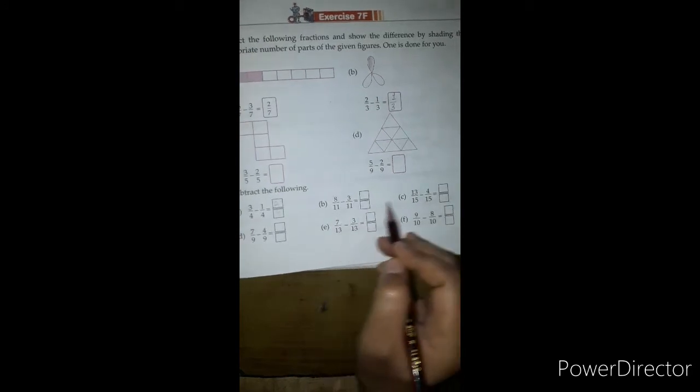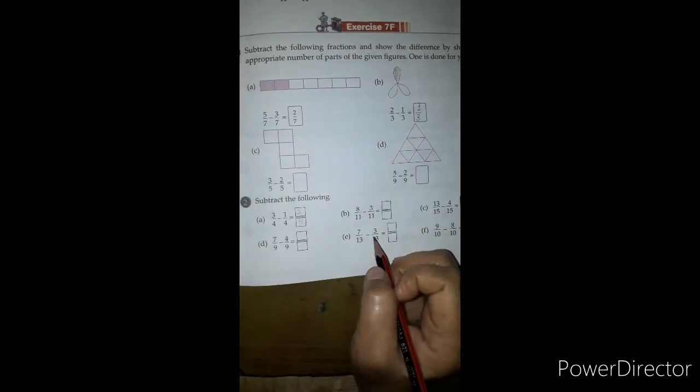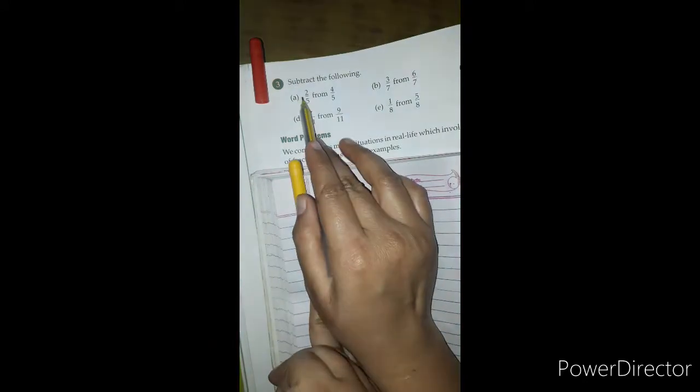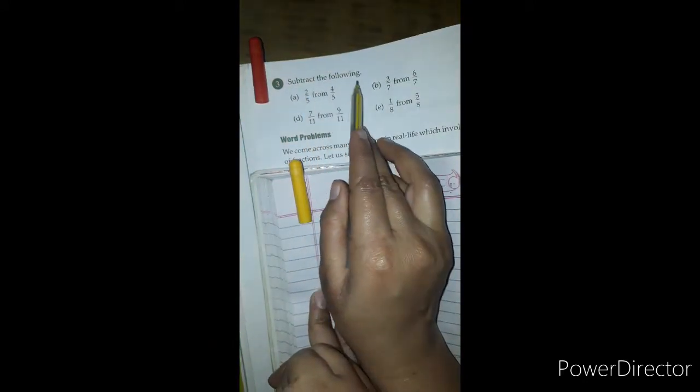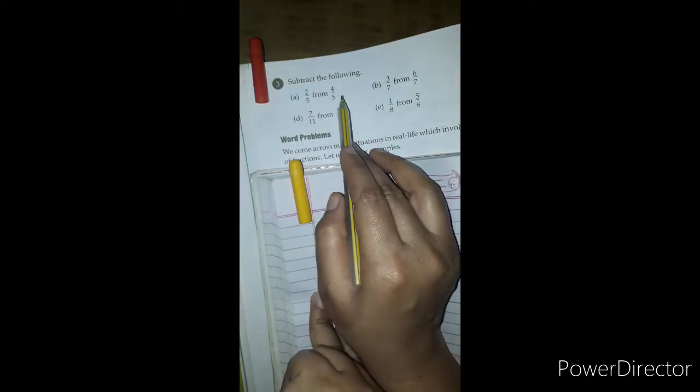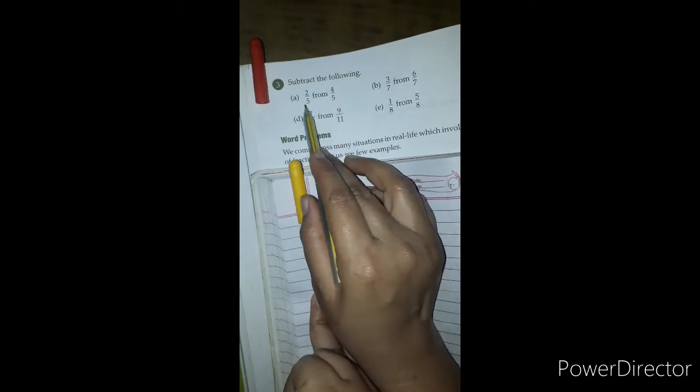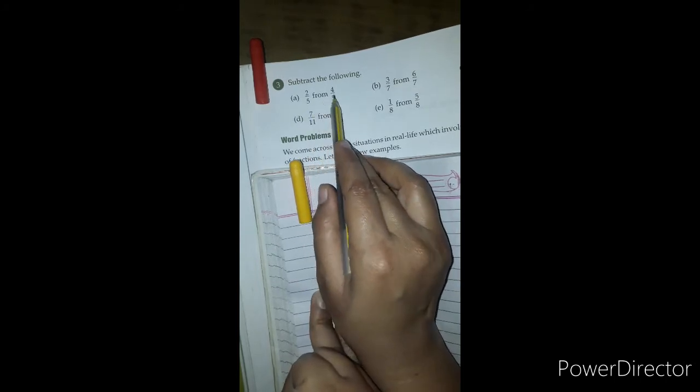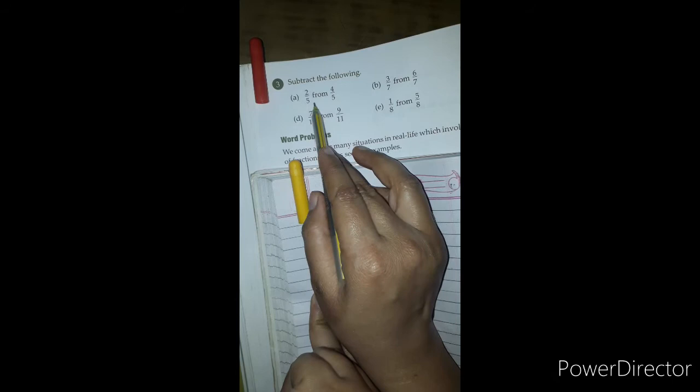So dear students, question numbers B, C, D, E, and F, do yourself on your book. Question number 3: Subtract the following. We need to subtract 2 upon 5 from 4 upon 5. Here, 'from'...